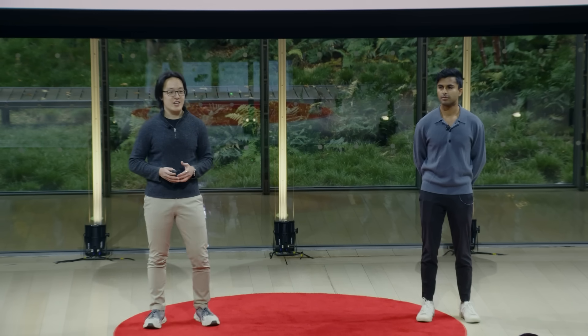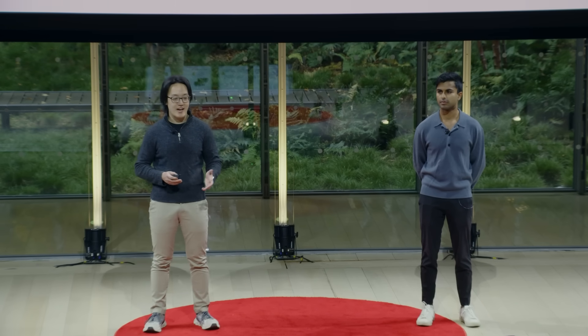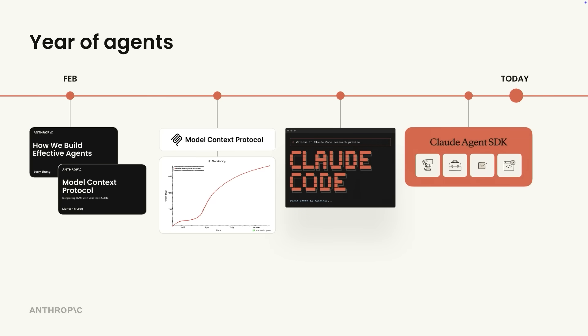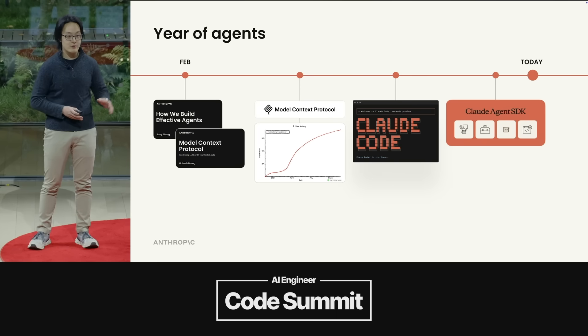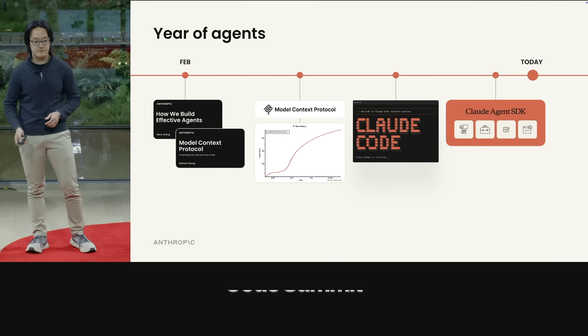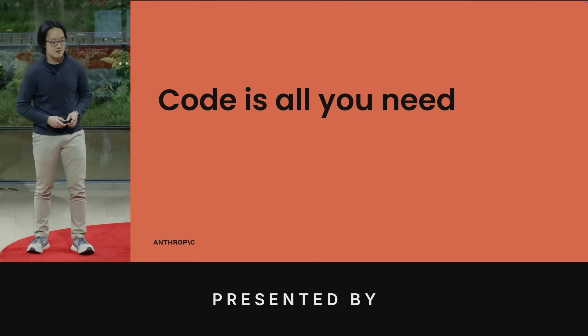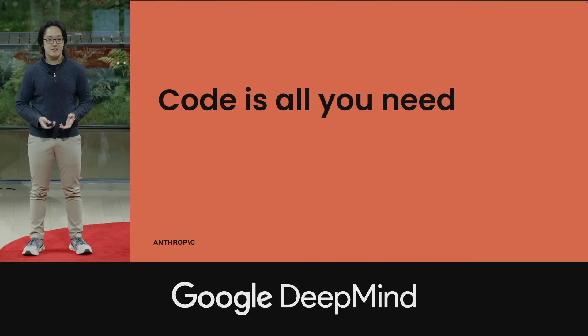A lot of things have changed since our last talk. MCP became the standard for agent connectivity. Claude Code, our first coding agent, launched through the world. And our Claude Agent SDK now provides a production-ready agent out of the box. We have a more mature ecosystem, and we're moving towards a new paradigm for agents. That paradigm is a tighter coupling between the model and a runtime environment. Put simply, we think code is all we need.